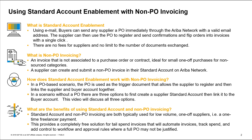What are some of the benefits of using standard account and non-PO invoicing? Both standard account and non-PO invoicing are typically used for low volume, one-off suppliers — for example, a one-time freelancer payment. This provides a completely free solution for tailspin invoices that will automate invoices, track spend, and add control to workflow and approval rules where a full PO may not be justified.